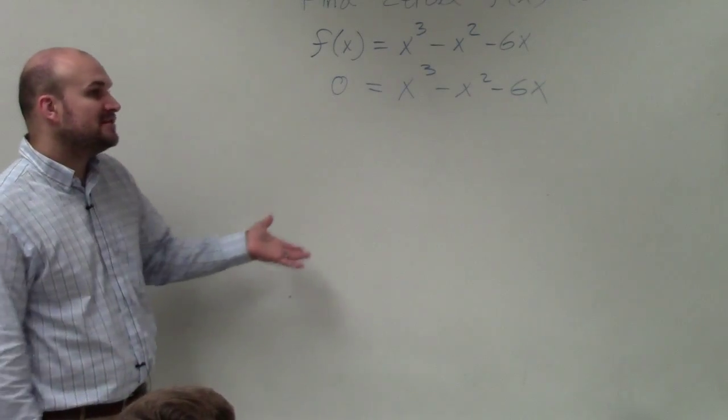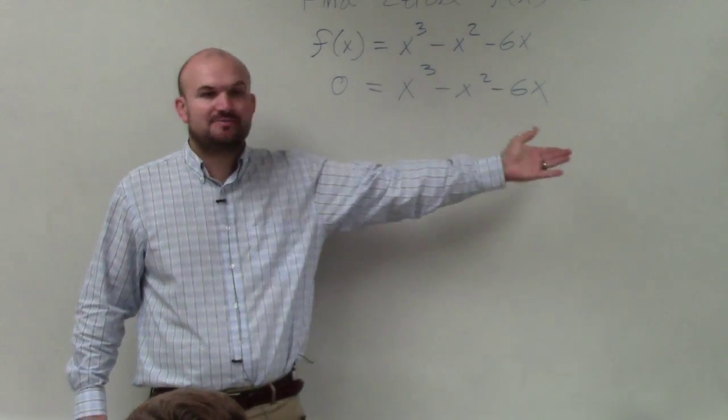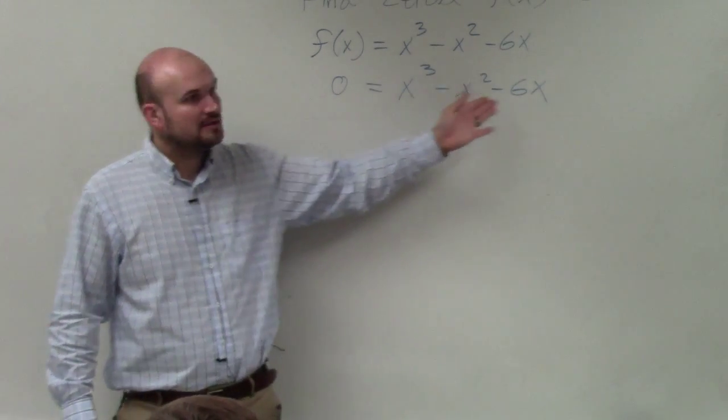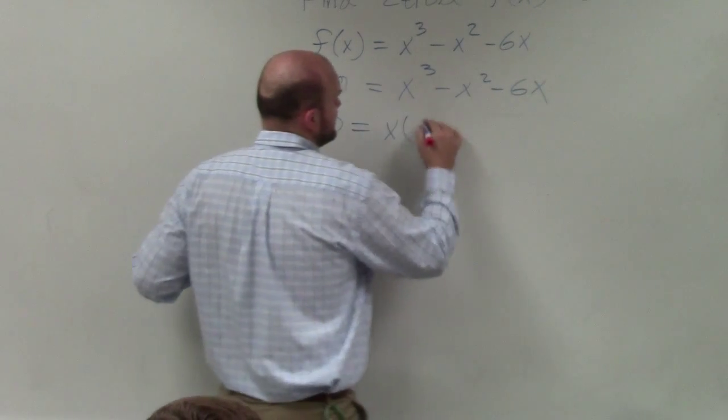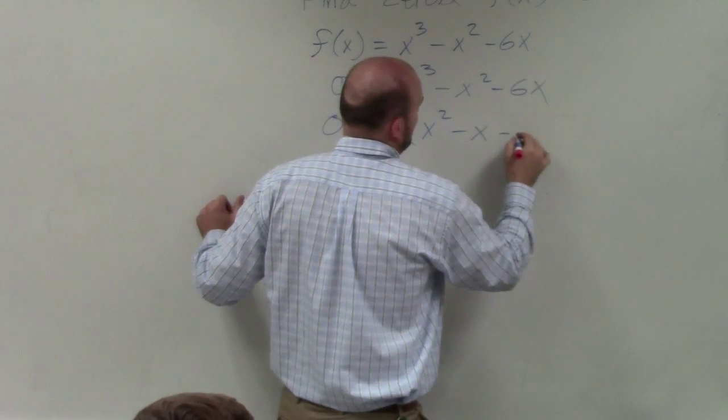First thing we always want to do is see if we have any common factors between all of our terms. And we have x. So you guys can say 0 equals x times x squared minus x minus 6.